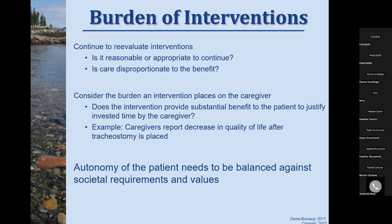We need to consider the burden of interventions — asking whether a given intervention is reasonable or appropriate to continue, whether care received is disproportionate to the benefit, and whether it provides enough benefit to justify the caregiver's time. Ultimately it comes down to balancing the patient's autonomy against ethical considerations of justice, trying to find a balance so that both patient and caregiver can live as well as they can despite the disease that affects both of them.